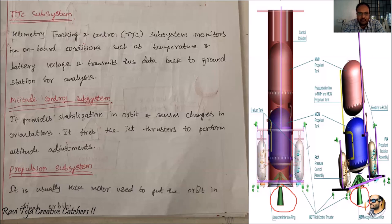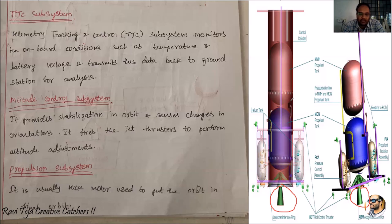The jet thrusters are fired to perform adjustments whenever required, so the attitude control subsystem keeps the satellite moving in the proper direction without stabilization problems. Under this, there is also a propulsion subsystem — essentially a kick motor used to put the satellite into the correct orbit.